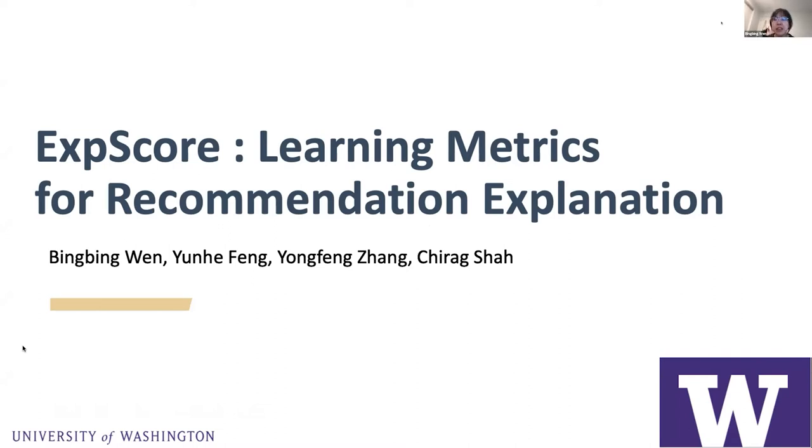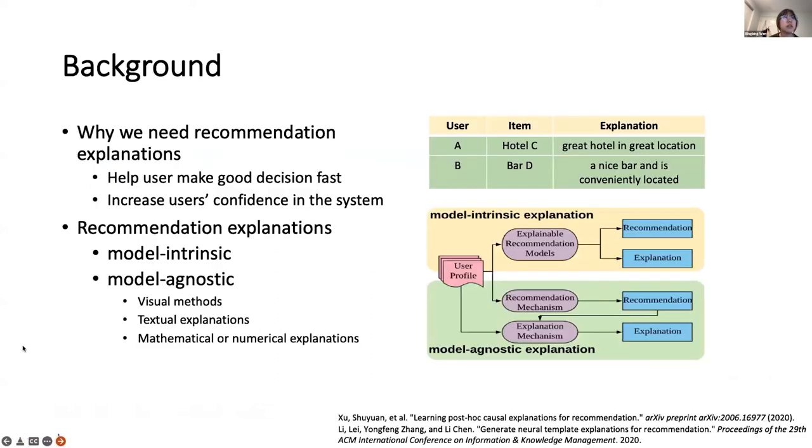In this paper, we propose a new dataset and a new evaluation framework for recommendation explanations. Explainable recommendation draws increasing attention in recent years. We can see the tables at the top show some explanation examples. These explanations help users make good decisions fast and increase users' confidence in the system.